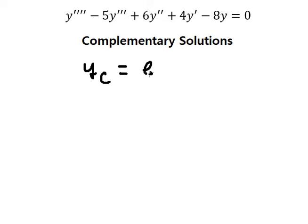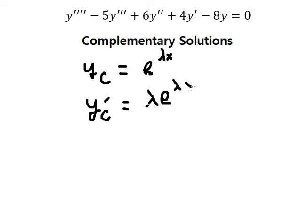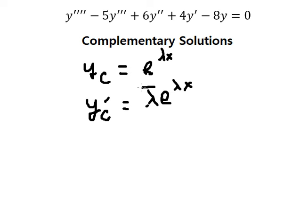yc equals e to the power of lambda x. We need to do the first derivative of yc, and we get lambda e to the power of lambda x — because when we differentiate e to the power of lambda x, we keep the same e to the power of lambda x and the derivative of lambda x gives us lambda. Now we go to the second, third, and fourth derivatives.